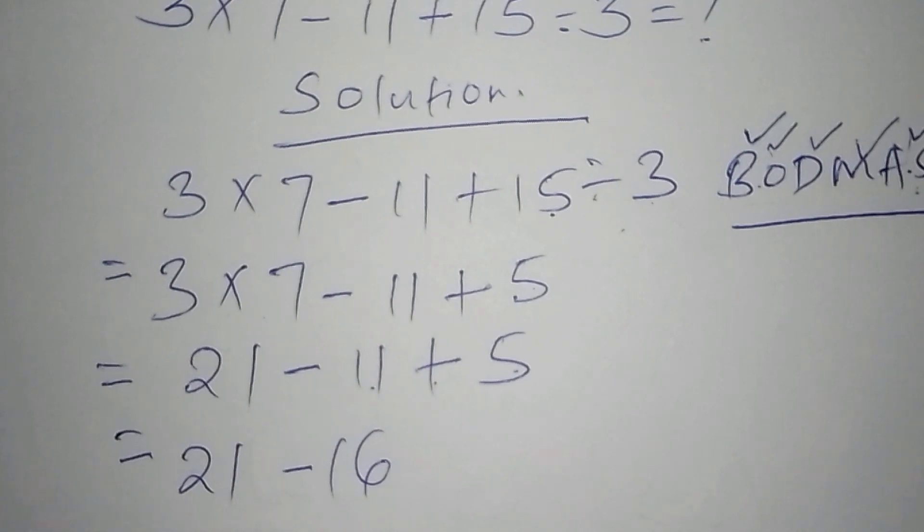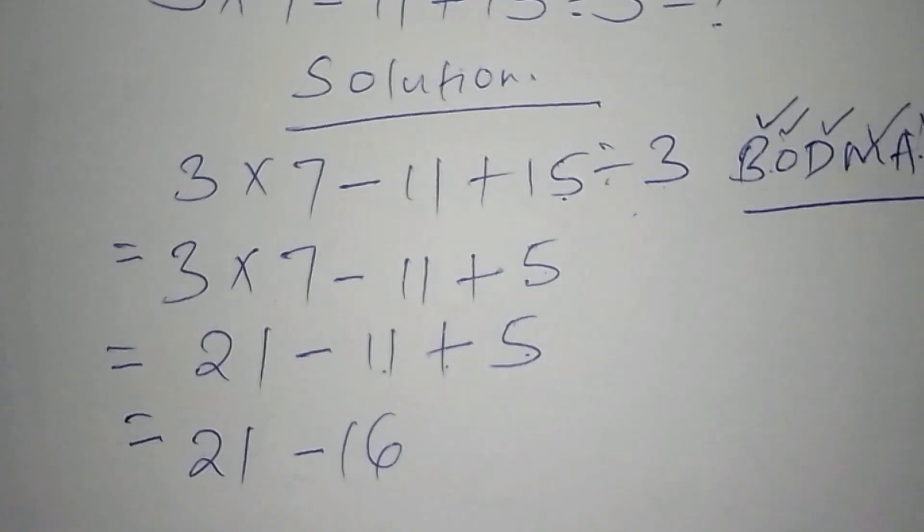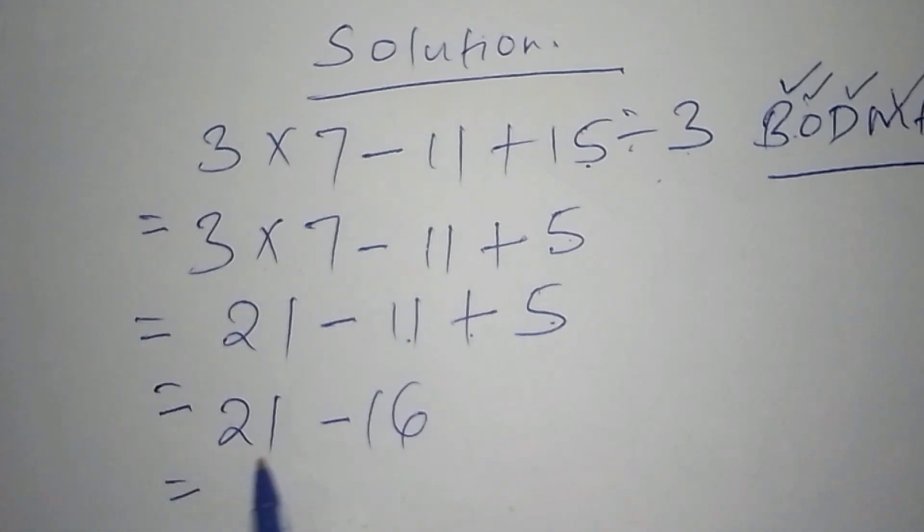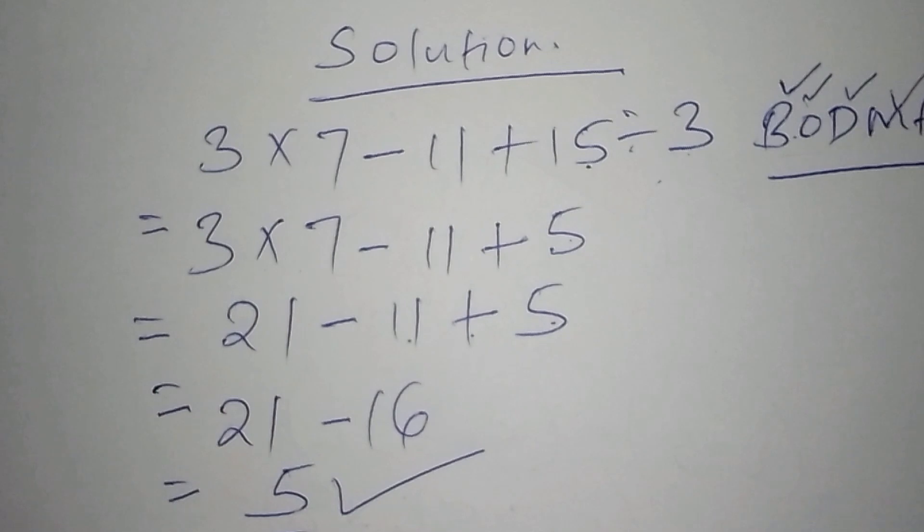Once we reach at that final point, when we are likely just to reach our final stages, here now we shall have 21 minus 16. And what is 21 minus 16? We shall end up with 5, as the correct answer.